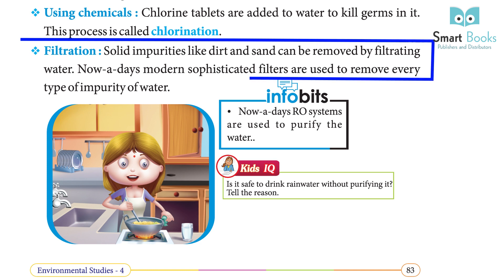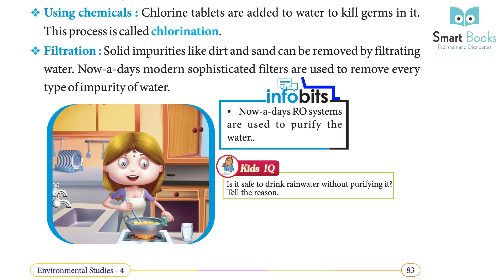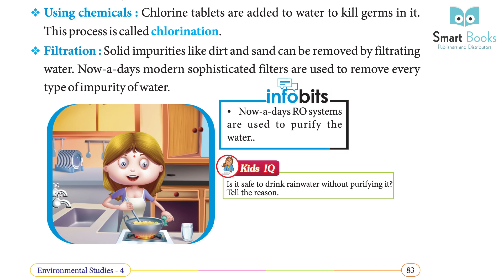Filtration — solid impurities like dirt and sand can be removed by filtering water. Nowadays, modern sophisticated filters are used to remove every type of impurity. RO systems are also used to purify water.